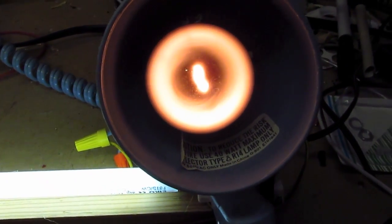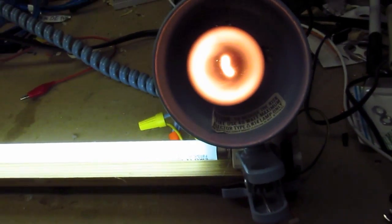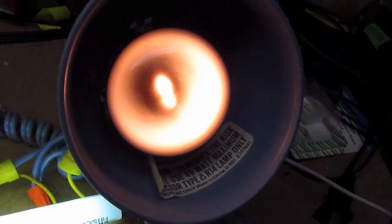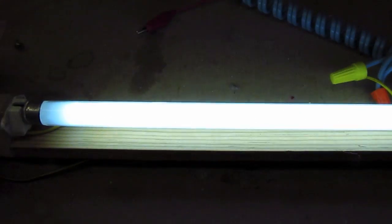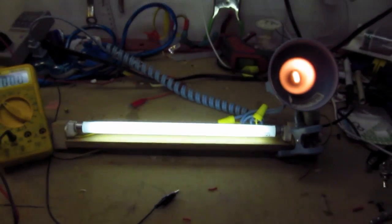You saw the bulb got dimmer because now about half the voltage is dropped across the little incandescent and the other half is dropped across this fluorescent tube, and the tube runs at about normal brightness.